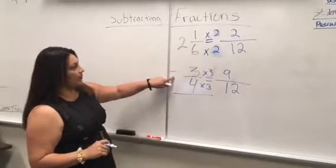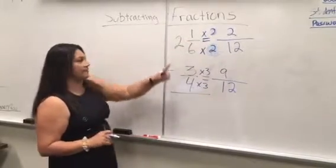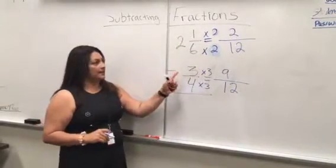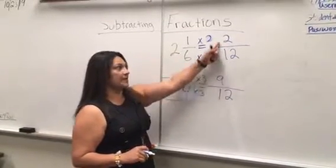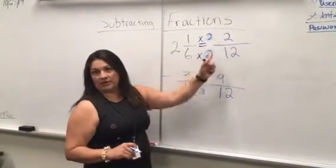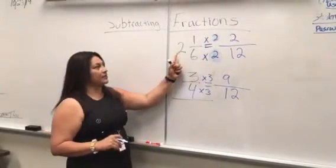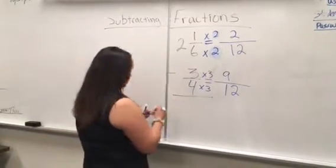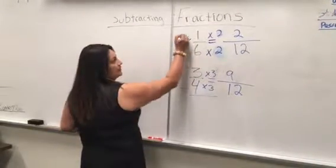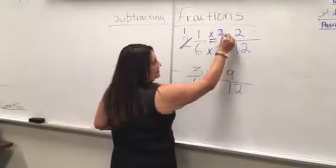We have a situation here. We need to subtract 9/12 from 2/12, but we can't subtract a larger fraction from a smaller one. So we'll borrow from the whole number. Cross out the 2, make it 1, and move that borrowed 1 in front of the fraction.